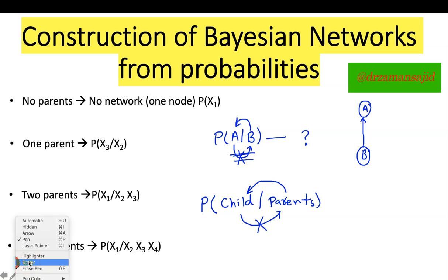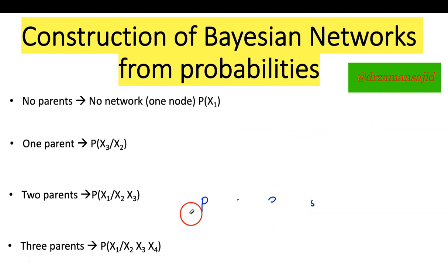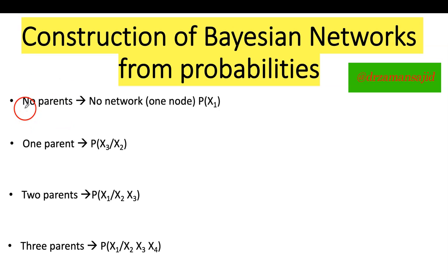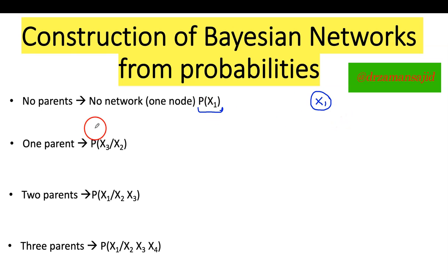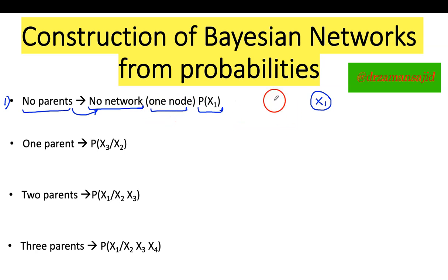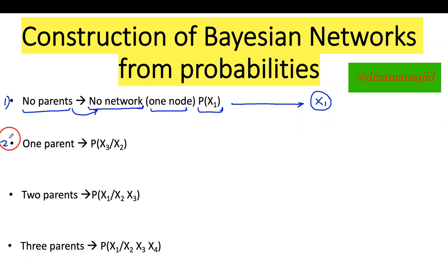Let's start with Case 1, which says there is no parent available — it is only a single node, the probability of X. If I want to draw this, it will be just a single node, P of X1. It could be any variable — P of A, P of B, P of C — it doesn't matter. In Case 1, there is no parent associated, so there is no network we can establish. The answer for Case 1 is just a single node, X1.